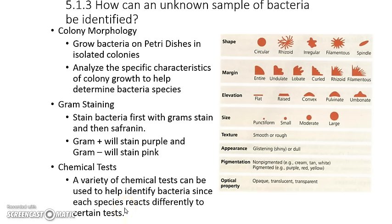Once you have bacteria on the plate, you need to look at some things. You can look at the morphology, which means characteristics. Some characteristics are shape, margin, elevation, size, texture, appearance, pigmentation, and optical property. You can stain the bacteria and look at it under your microscope — depending on what color it shows up, that's called gram staining or differential staining. You can also do different chemical tests on your bacteria and see what happens when you add chemicals.